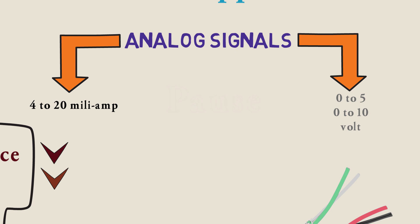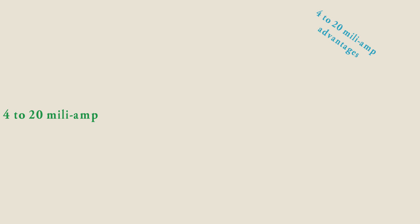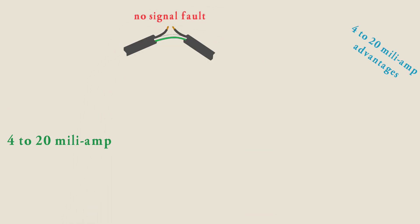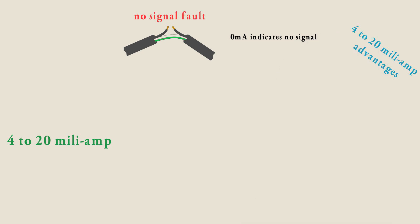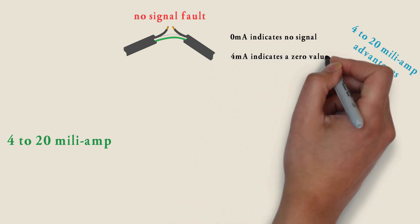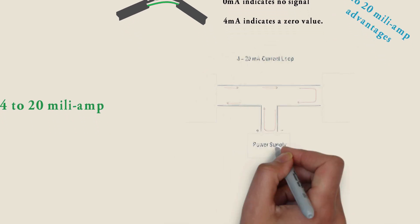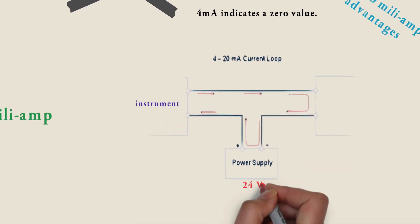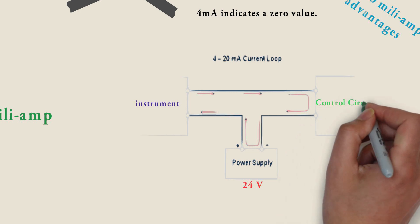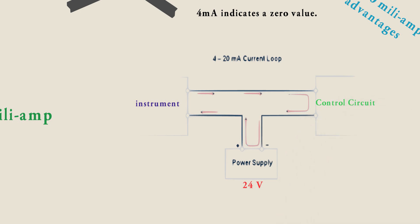The 4 to 20 milli-amp current signal offers some real-world advantages, such as: a no-signal fault can easily be detected. 0 mA indicates no signal, while 4 mA indicates a zero value. An instrument can be loop-powered, often with 24 volts DC, so it can be powered by the same cable that instrument transmits on.